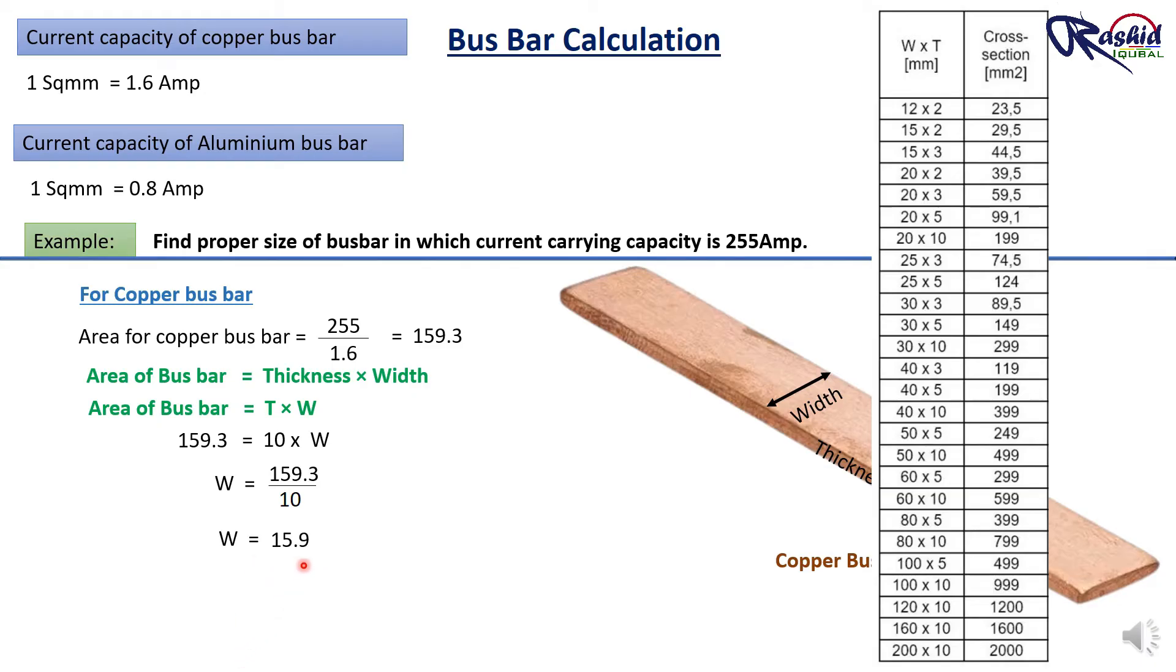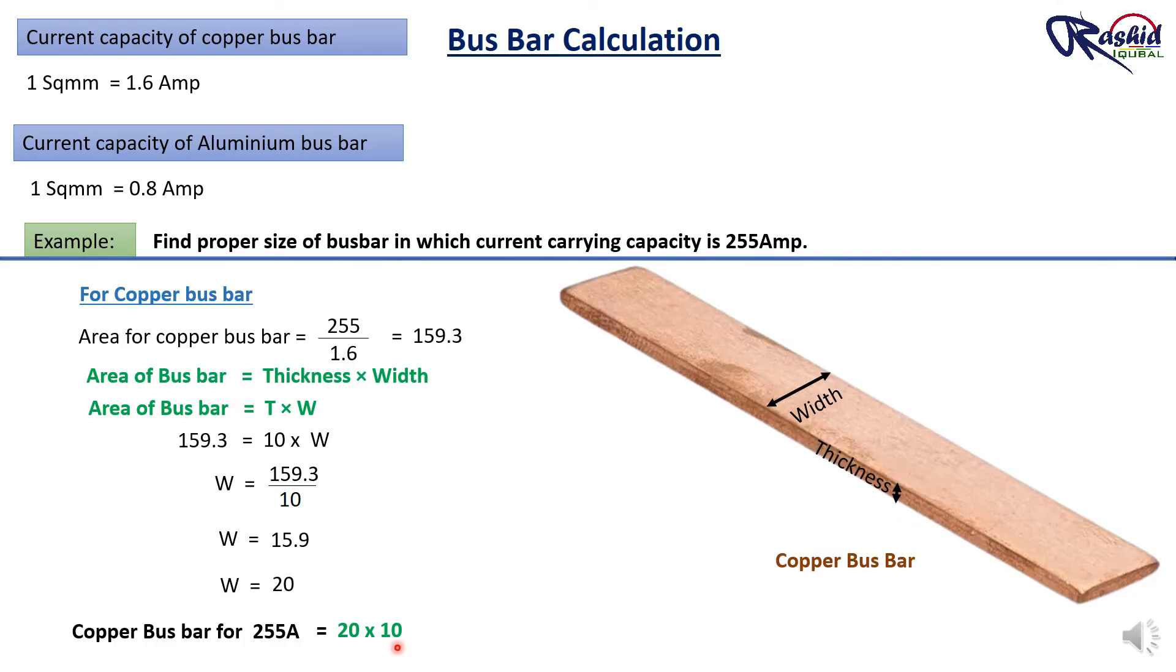Since 15.9 mm is not a standard size, so we can choose the next bigger width available in the market, which is 20 mm with 10 mm thickness. Therefore, the selected size of copper busbar is 20 mm by 10 mm, which is capable of carrying the required 255 ampere current. So here we can use 20 by 10 mm of copper busbar.